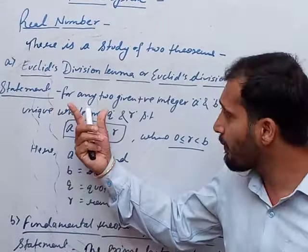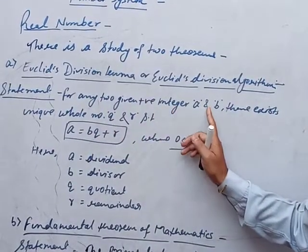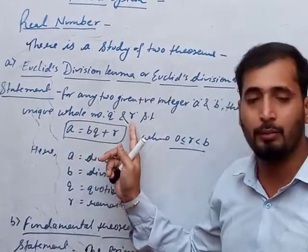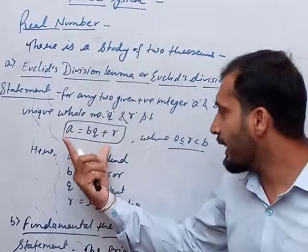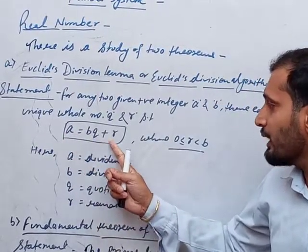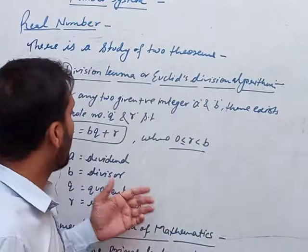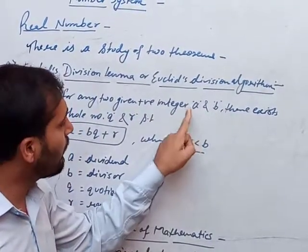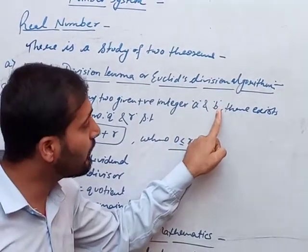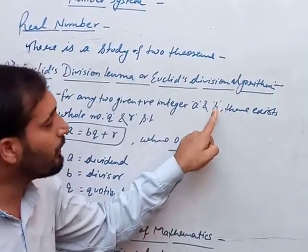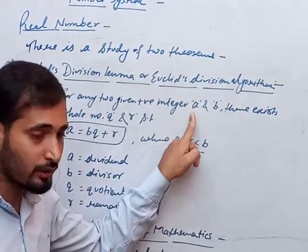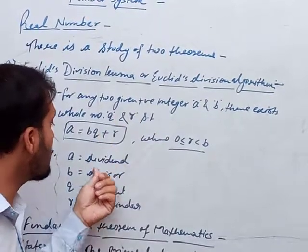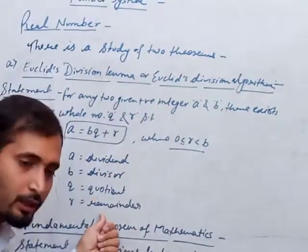The statement of Euclid's Division Lemma is: for any two positive integers a and b, there exist unique whole numbers q and r such that a equals bq plus r. This means that if you take two positive integers — one as dividend and another as divisor — on dividing the first by the second, you get two whole numbers q and r, where q is known as the quotient and r is known as the remainder.